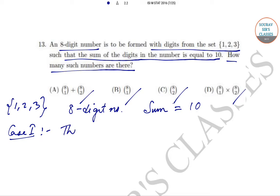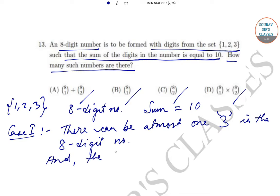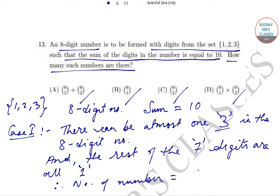we can consider that there can be one 3 in the 8-digit number and the rest of the 7 digits are all ones. So there is one 3 and seven 1s, so the sum is equal to 10. And in this case, the number of numbers is given by 8C1. Now we'll